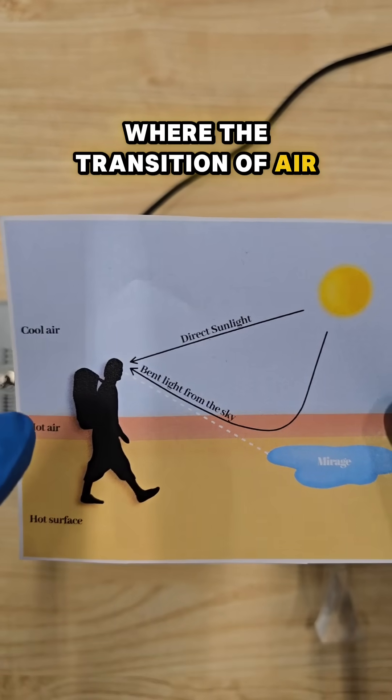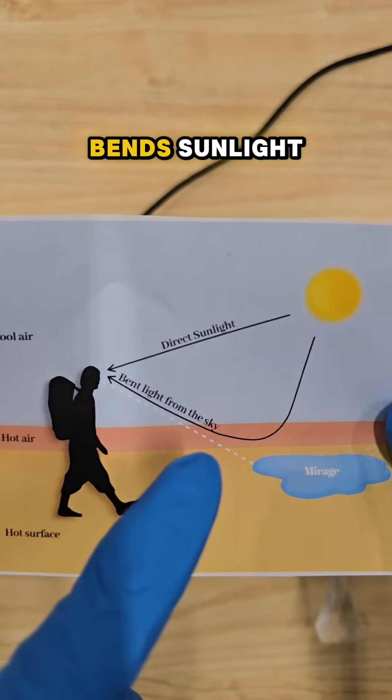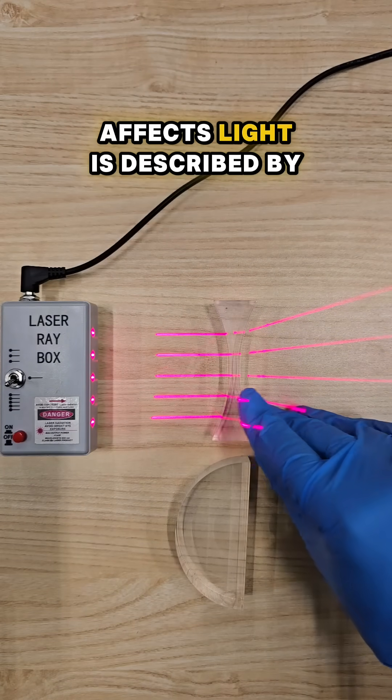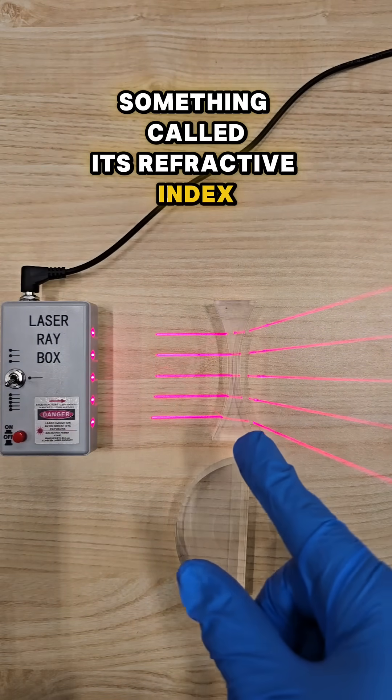Where the transition of air from hot air to cooler air bends sunlight. How much a transparent material like glass affects light is described by something called its refractive index.